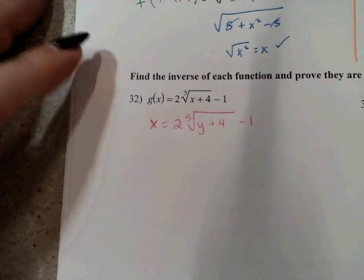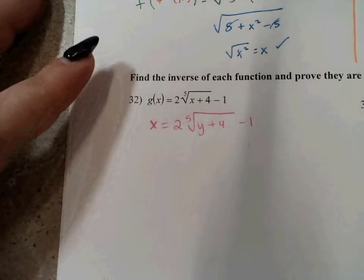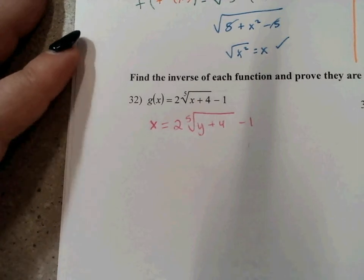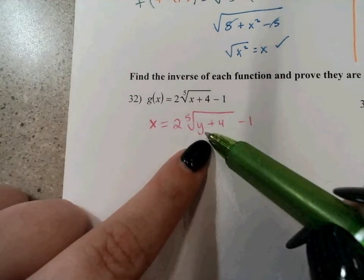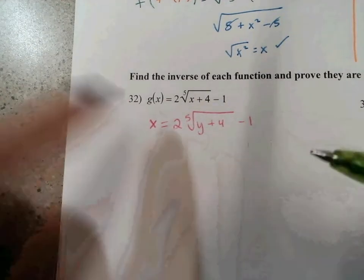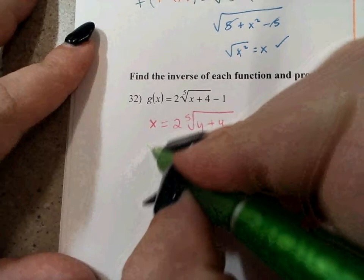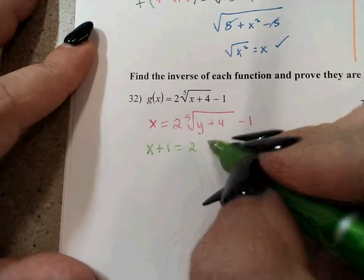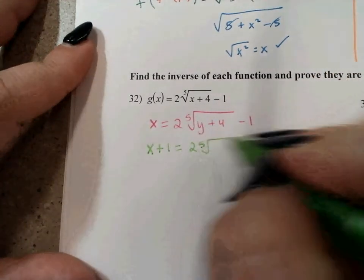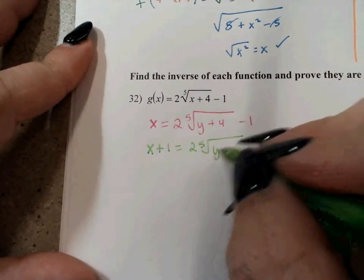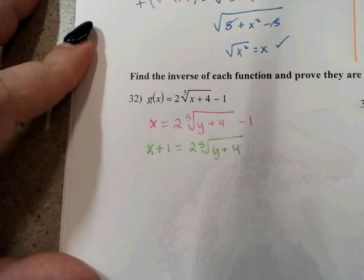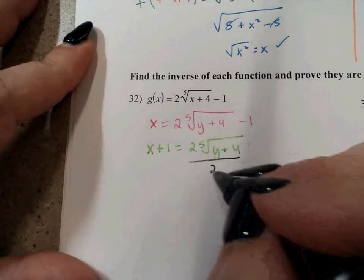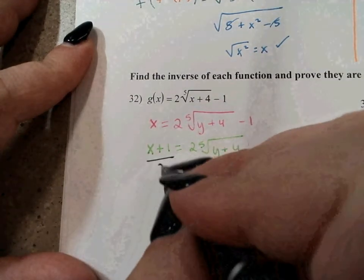The whole thing about finding inverses is making sure that you're undoing the operations in the correct order. The outermost operation acting on y is the minus 1, so the first thing we're going to do is add 1. The next outermost operation is the multiplication by 2, so we're going to divide both sides by 2.